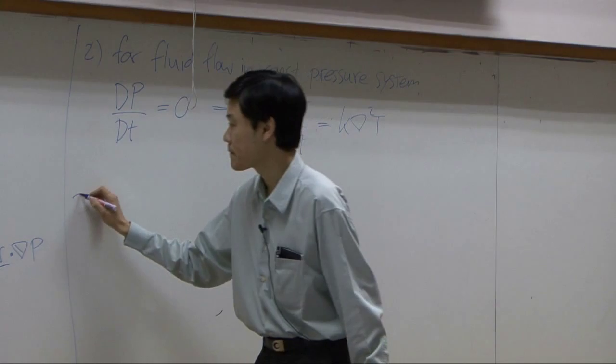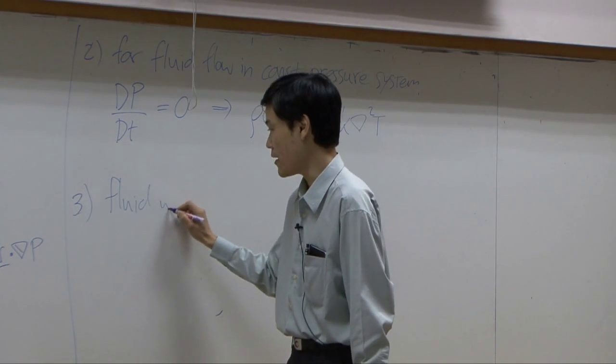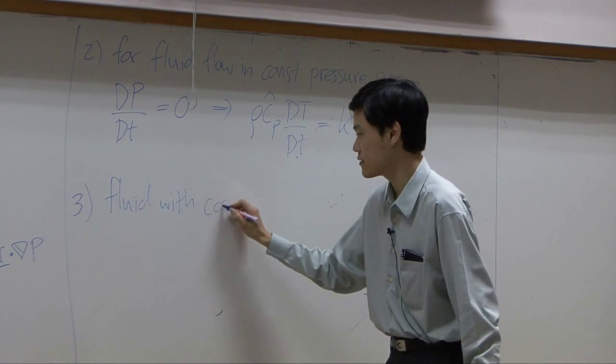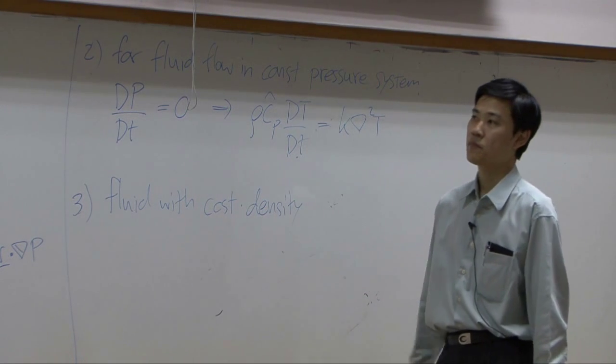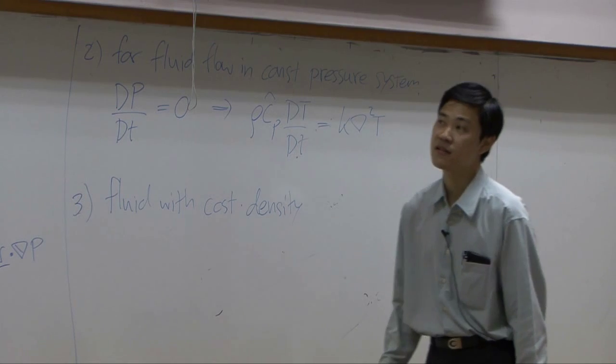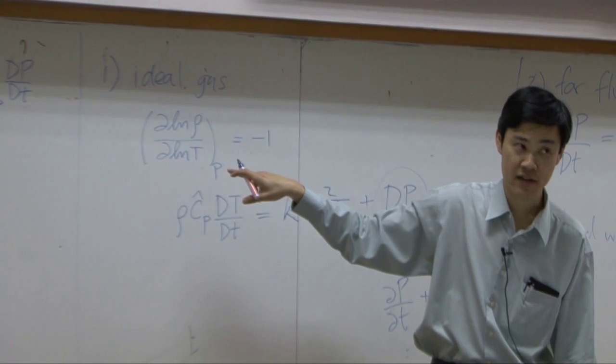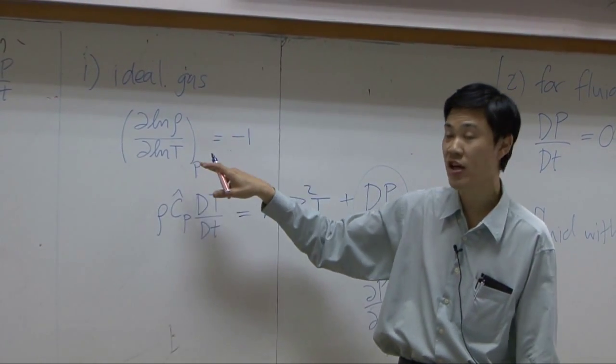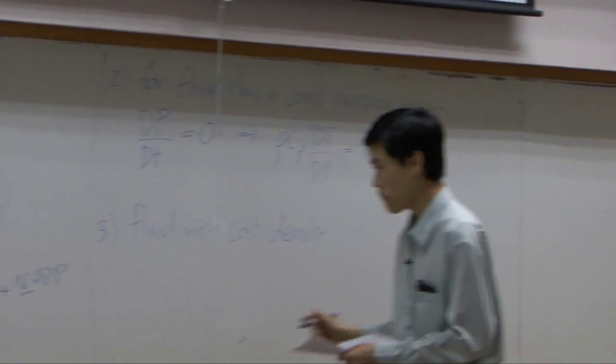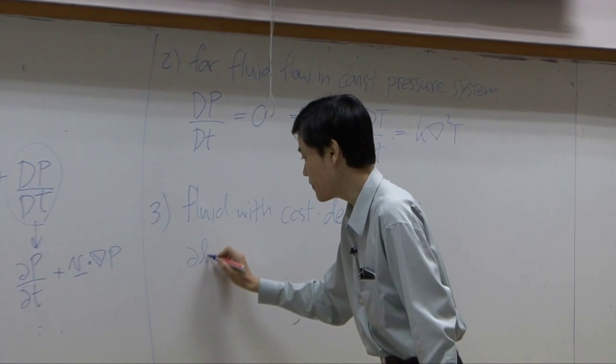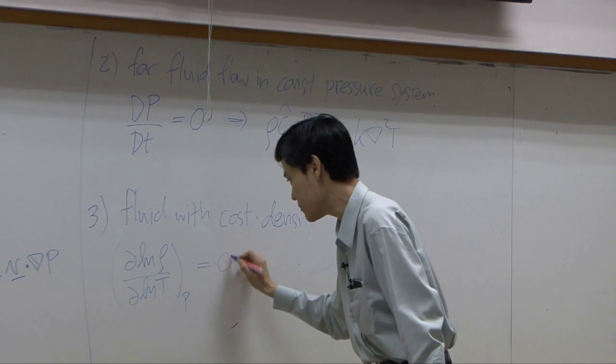Third case would be when you have fluid with relatively constant density. If density is constant, that means this term does not change with anything. The density does not change with time, does not change with temperature. So when you differentiate it, it becomes zero. So this term d ln rho by d ln T at constant pressure becomes zero.